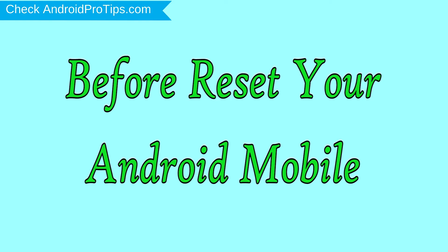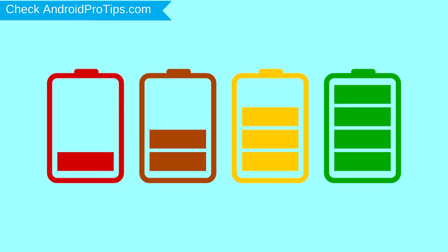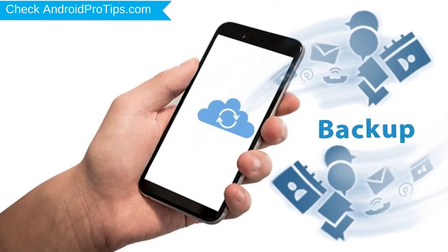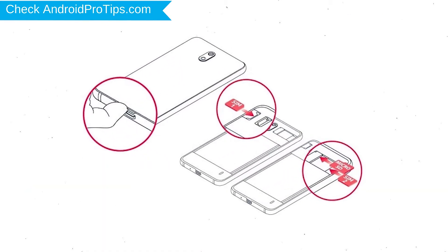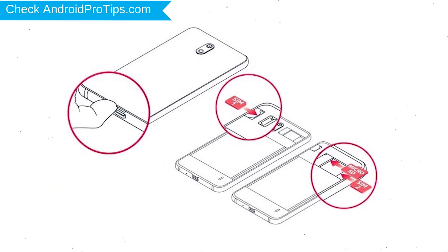Before resetting your mobile, charge your mobile if the battery is less than 50%. You need to make sure that the data on your device is backed up so you do not lose valuable photos or documents. Reset deletes all your mobile data, so you should back up all important data and remove the SIM and SD card.